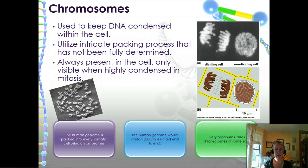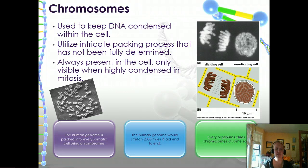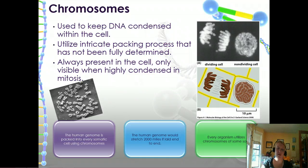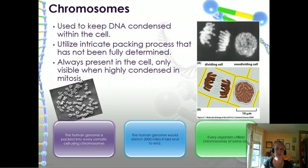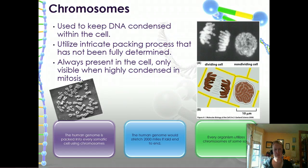Let's get started. Every cell has the entire genome packed into it. How does it do that? The human genome, if stretched out, would be over 2,000 miles long. So how is this packed into these tiny cells that we can't even see with the naked eye? It's all because they're packed into chromosomes — this is how we keep DNA condensed within the cell.